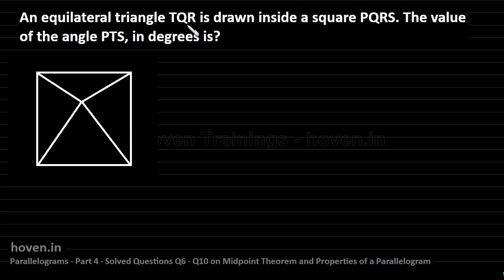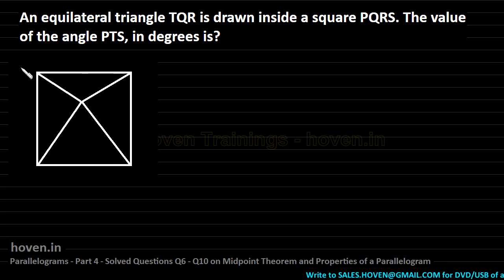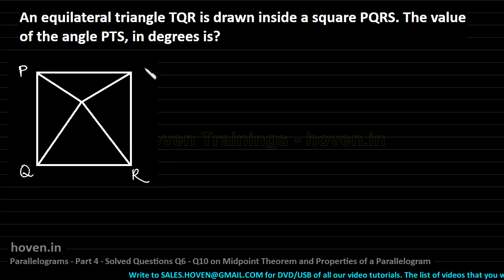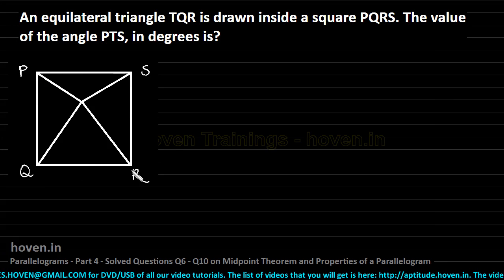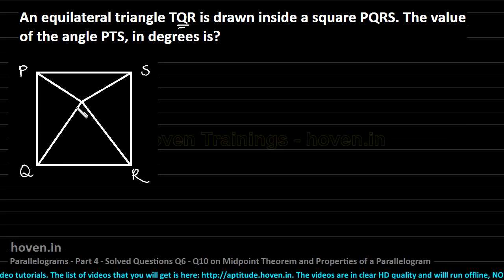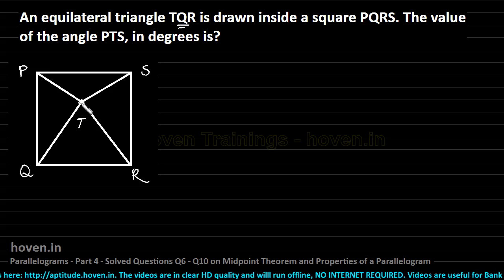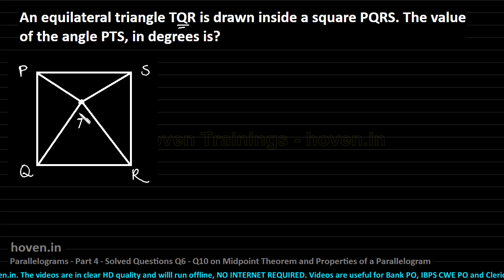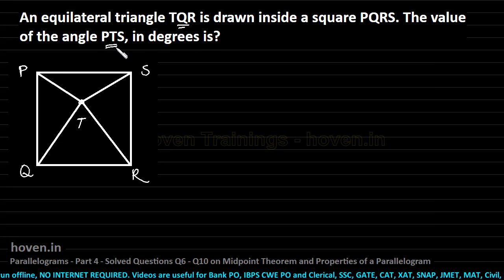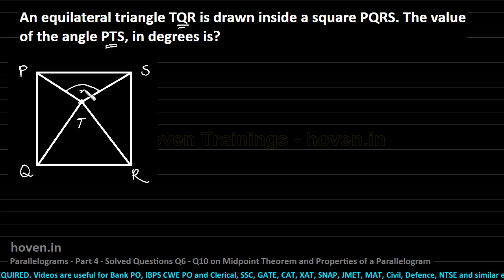An equilateral triangle TQR is drawn inside a square PQRS. We will mark the various vertices: P, Q, R, and S. The equilateral triangle inside the square has its third vertex marked as T, so TQR is the equilateral triangle. The value of angle PTS has to be found out — that is, we have to find the value of this angle X.